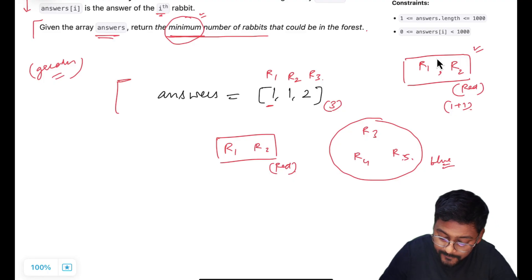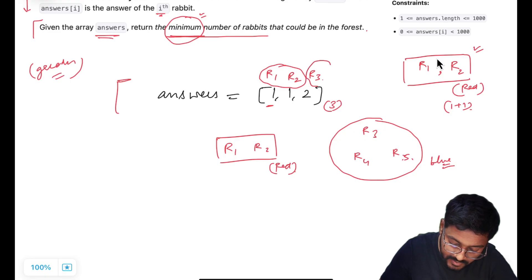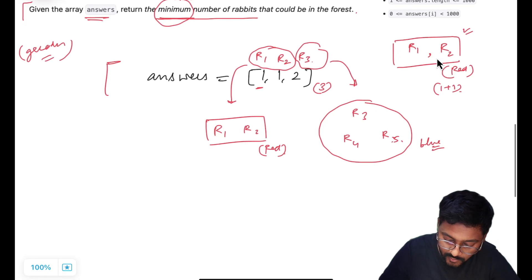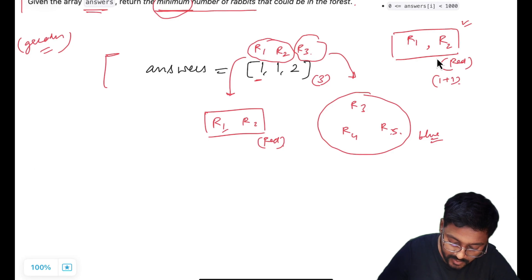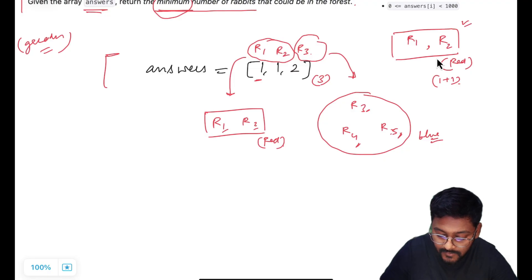So ultimately we came to know that to keep it minimized, we are keeping R1 and R2 in one group and R3 in the second group. The answer was given by three rabbits R1, R2, and R3. But as R3 is from this group, there might be two more rabbits in the forest — this is for certain — otherwise this validation won't be true.